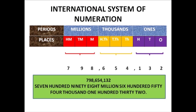In the international system of numeration, the same two things are important: place values and commas. There is a difference between the periods used here versus the Indian system. In the international system the places are: ones, tens, hundreds, thousands, ten thousands, hundred thousands, then millions, ten millions, and hundred millions. Up to the thousands place it is the same as the Indian system, but after that it changes.